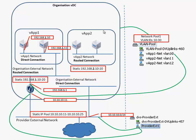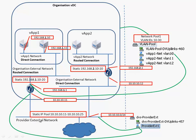The routed connection is configured with static addresses 192.168.2.10 to .20. If we are using a routed connection in a vApp we have to deploy a vShield Edge device. This vShield Edge device can be used to fence this vApp from the direct connection, which is connected to the provider external network. The inside address is 192.168.2.1, and the outside address comes from the provider external network — in this case address .12, since .11 is already used. This vShield Edge device is connected to a newly deployed port group within the VLAN pool.